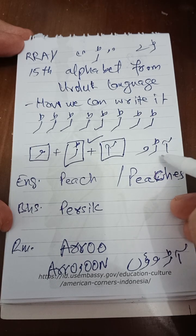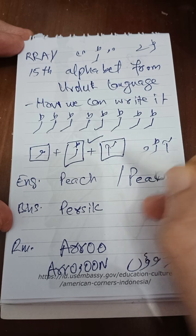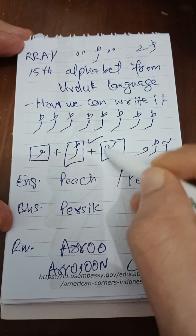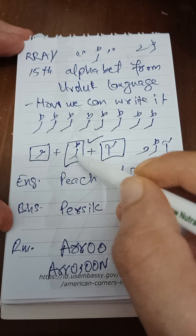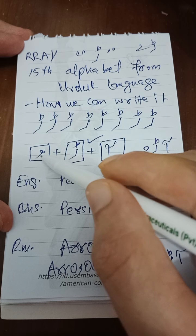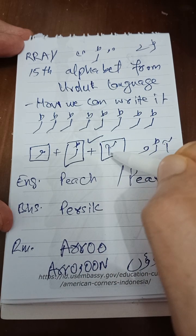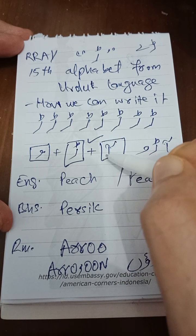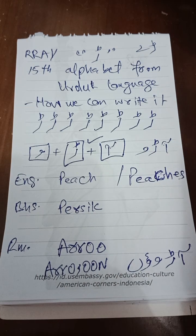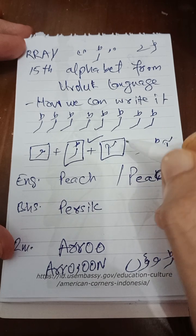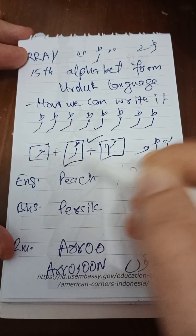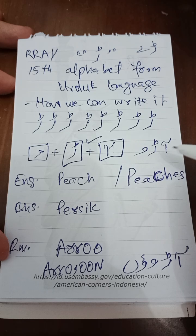Here I separated the three letters of 'aadu': the first is Alif Madda (آ), the second is 'Day' (ڈ), and the third is 'Wao' (و) — which in Urdu we call 'wao' and in Arabic is called 'wow.' These letters don't appear in Arabic this way, but we use them in Urdu. So Alif Madda + Day + Wao = aadu.